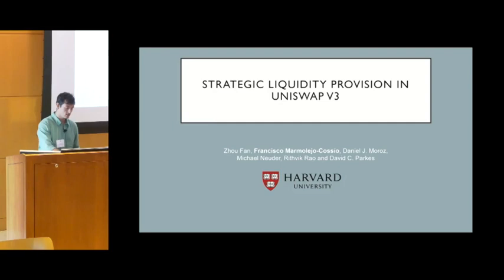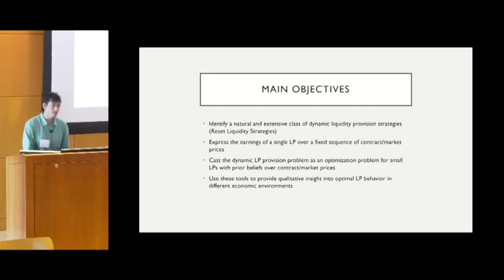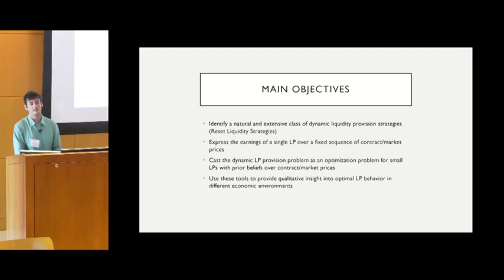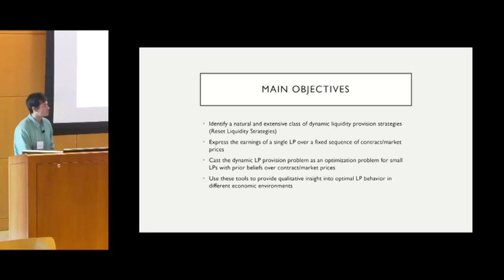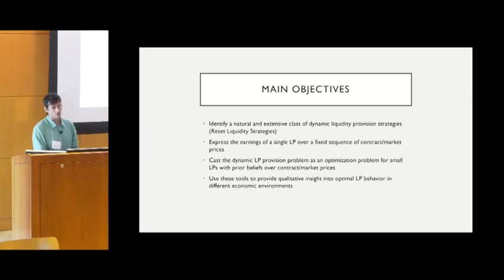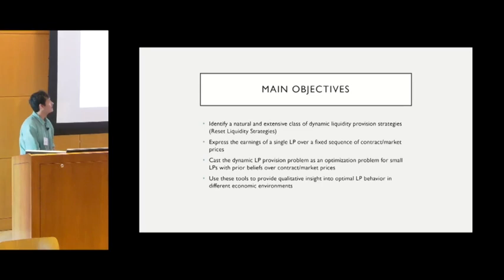I want to hop straight into the main objectives. In this paper, we're going to identify a natural and extensive class of dynamic liquidity provision strategies. We'll express the earnings of liquidity providers for these simple but flexible classes of strategies, and treat the problem of optimizing over them — casting this as an optimization problem — and look at qualitative insights in terms of what liquidity providers might be doing on-chain.